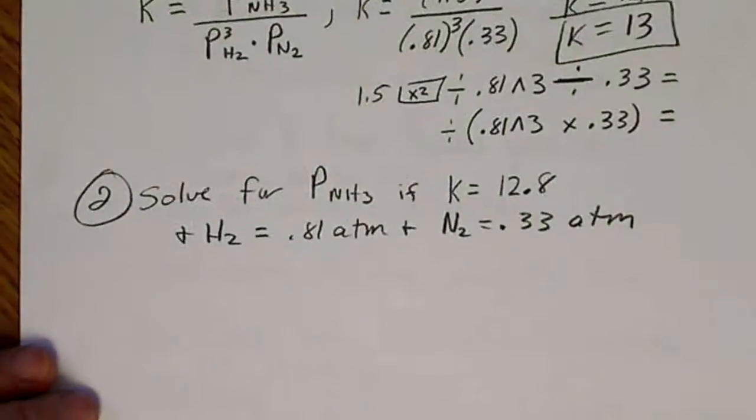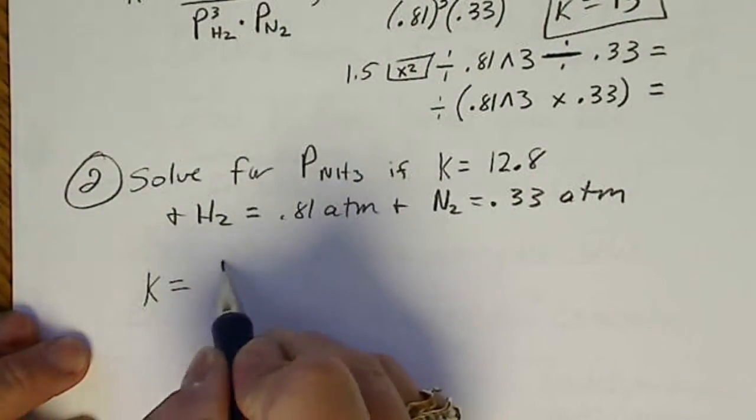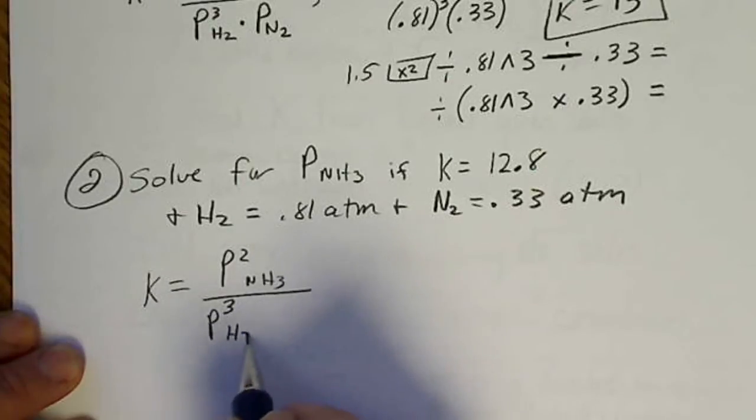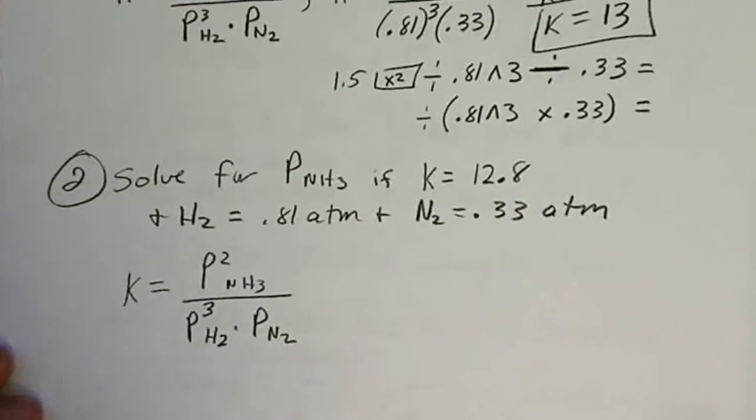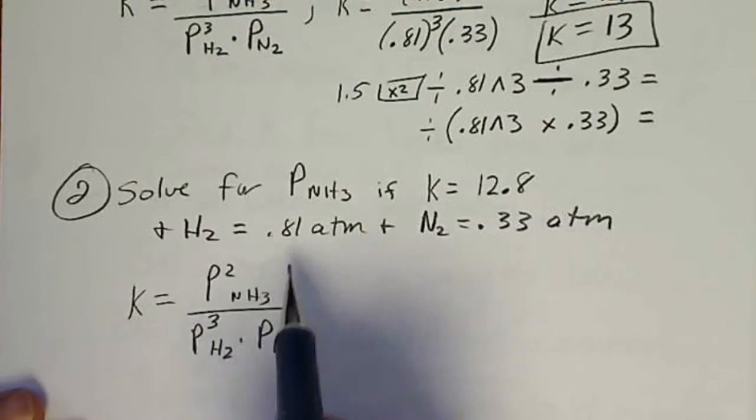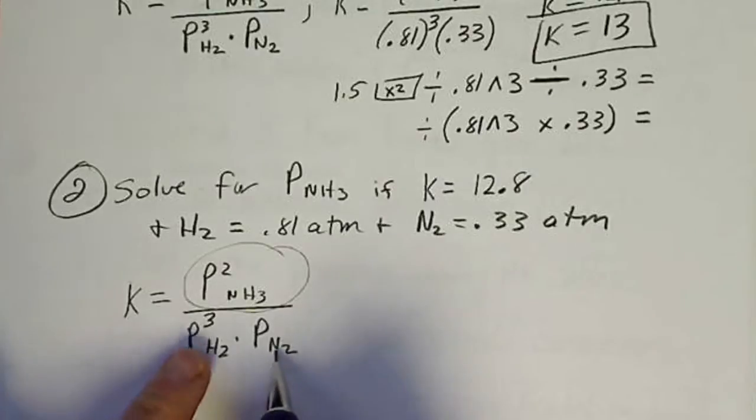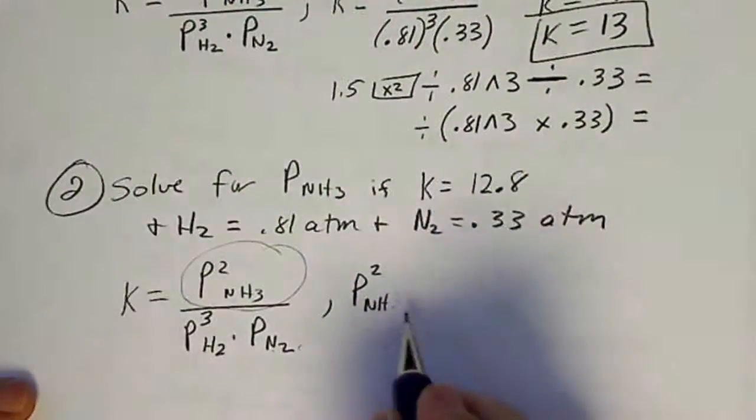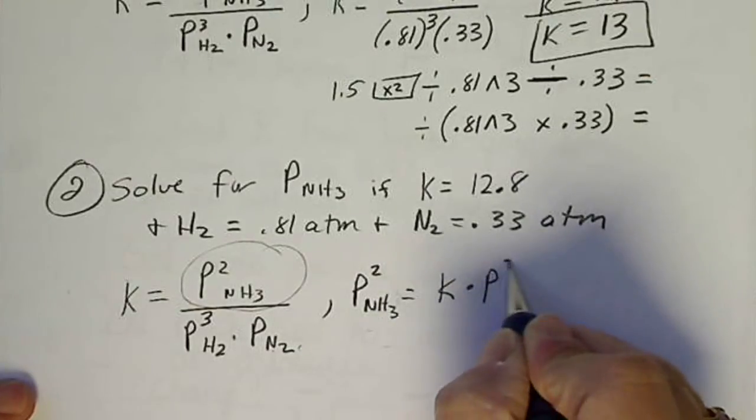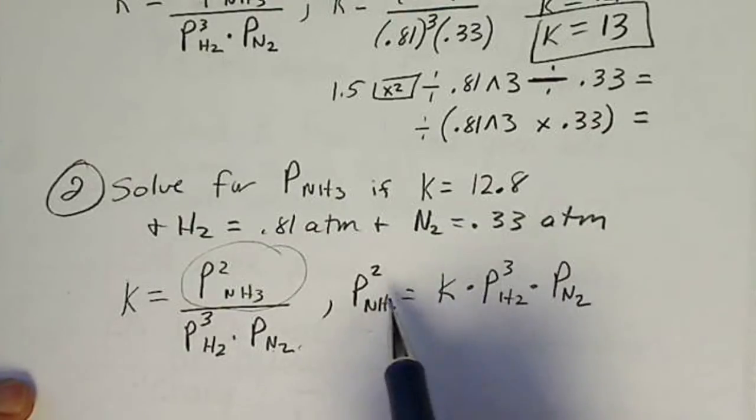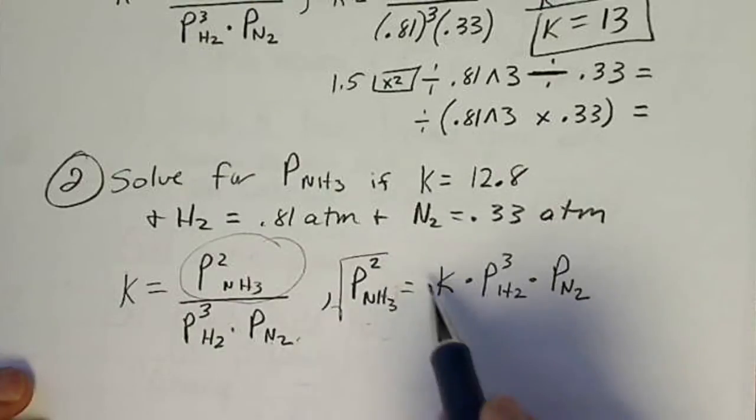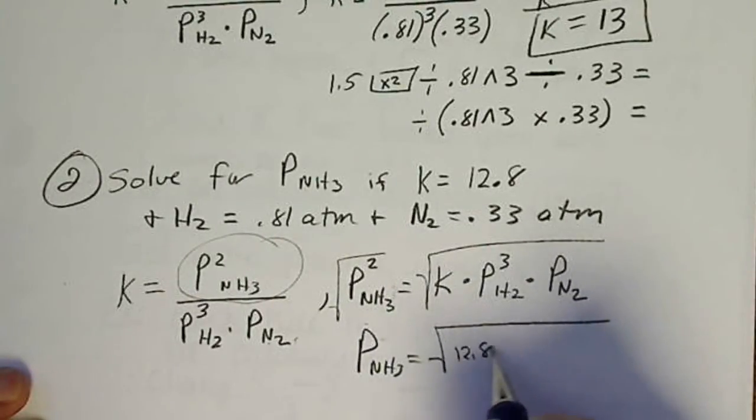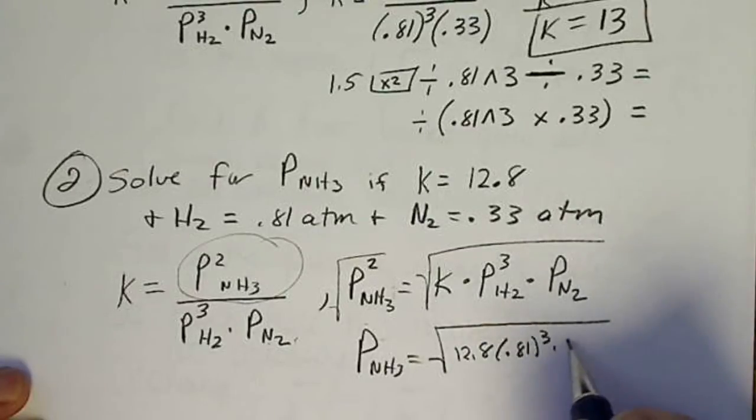This would be the second scenario that we might see, solving for an unknown. It's still best to write the equilibrium expression and then rearrange the equation for the unknown that we're looking for. I generally rearrange the equation before I ever get started. We know everything except for NH3. So to get rid of this denominator, I'm going to put it over here. So the pressure squared of NH3 is equal to the K value times the pressure cubed of hydrogen times the pressure of nitrogen. And if I want the pressure of NH3, I've got to take the square root of both sides. So my pressure of NH3 is the square root of 12.8 times 0.81 cubed times 0.33.